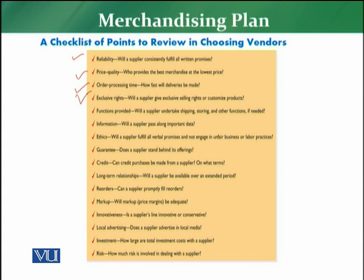The fourth point is exclusive rights — will the supplier give you exclusive rights of selling, or will they make customized products for you? Internationally, for a particular retail store, a company may design a different size of product. For example, if a bottle is available in 500ml, 200ml, or one liter, maybe for a particular retailer it is available in 1.25 liters — that is exclusivity. If the vendor offers exclusive or customized products, that is a positive factor.